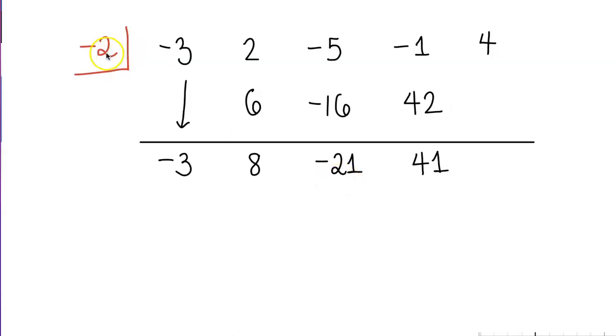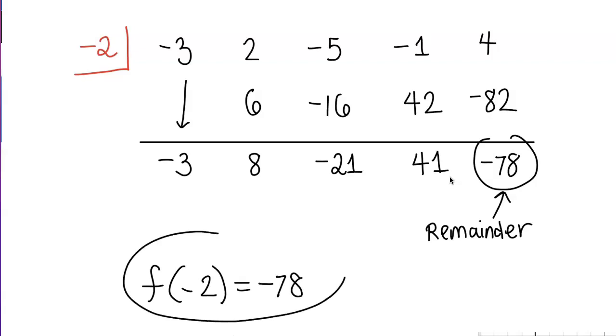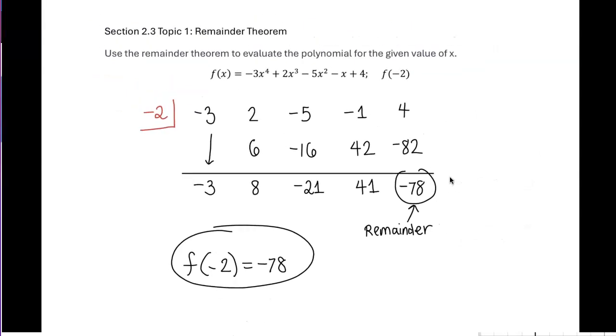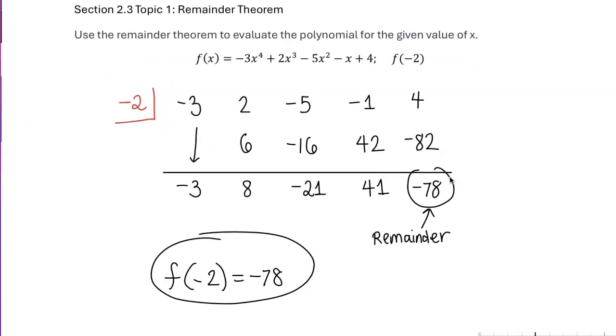Lastly, multiply negative 2 times 41, which is negative 82. The final answer is 4 plus negative 82, which equals negative 78. So the remainder is negative 78, meaning f of negative 2 equals negative 78. That's how you use the remainder theorem to evaluate a function.